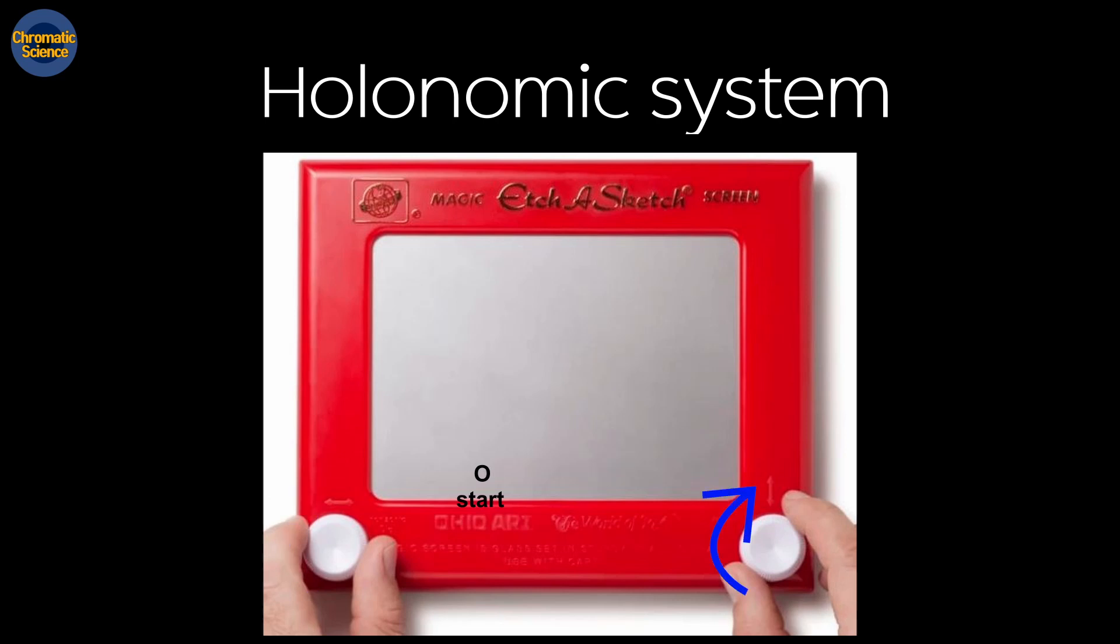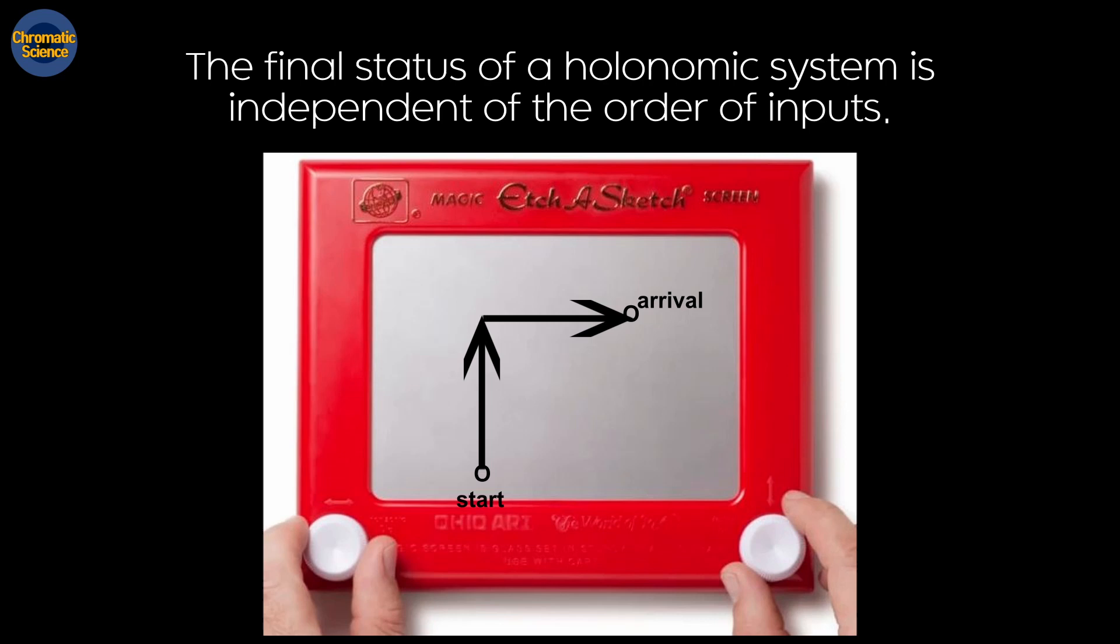If you rotate the right knob first and then the left one, the pen moves up and then to the right. The final location of the pen is the same even though the trajectories are different. Like shown here, the final status of a holonomic system is independent of the order of the input values.